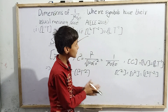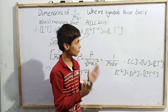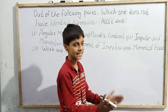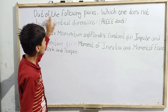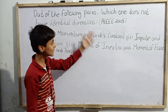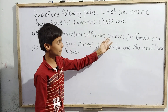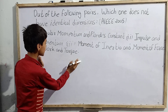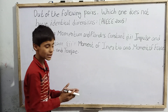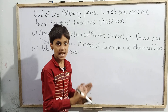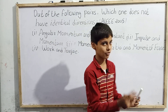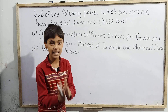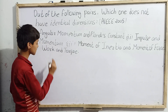Since this video isn't over yet, I am going to solve one more AIEEE question. The new question was asked in AIEEE 2005. It asks: out of the following pairs, which one does NOT have identical dimensions? The options are: (A) angular momentum and Planck's constant, (B) impulse and momentum, (C) moment of inertia and moment of force, and (D) work and torque. We need to find the option where both quantities have different dimensions.